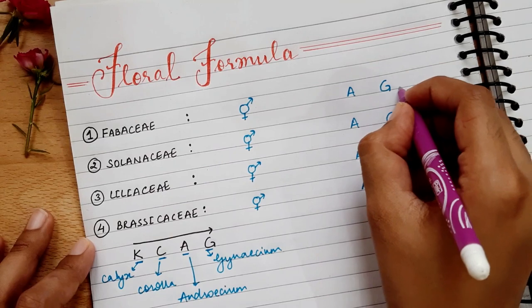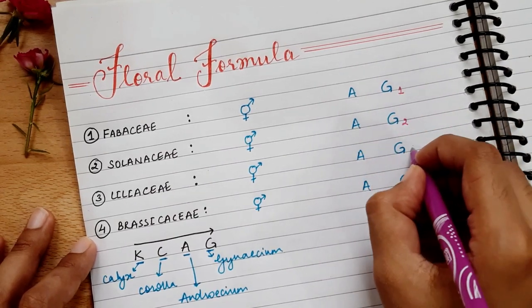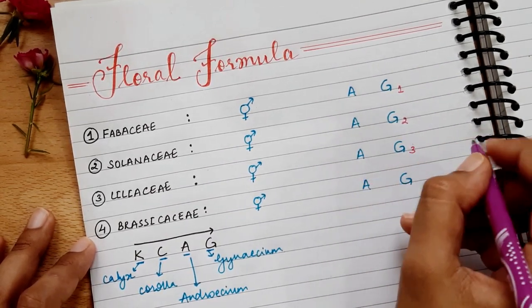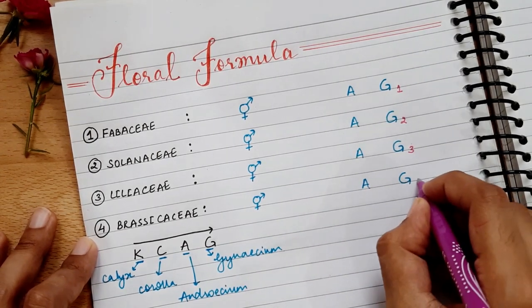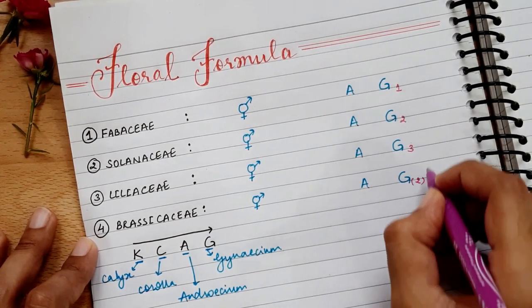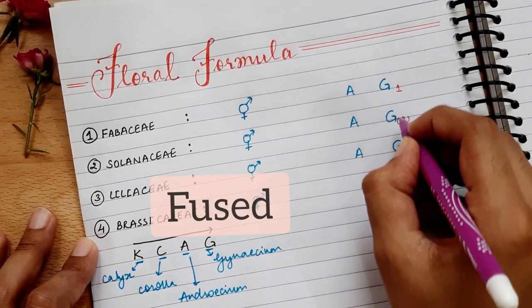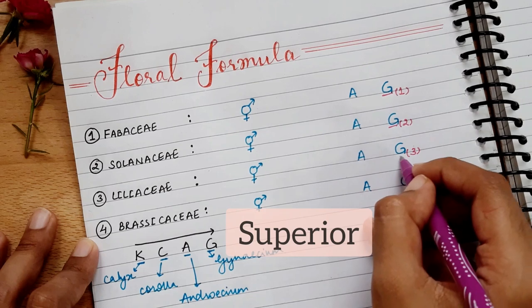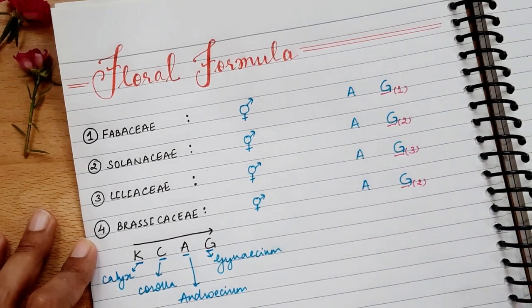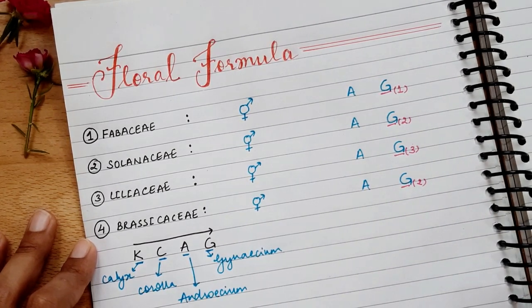Now, we will mention the number of ovaries in G, which are according to their order: 1, 2, and 3. But the last one is 2 and 4, which we will see later also. Now, I am writing 2 here. And all ovaries are fused in four families, so we will make brackets. And the four ovaries are superior, so we will underline G.